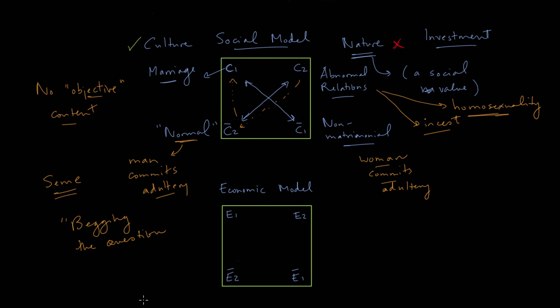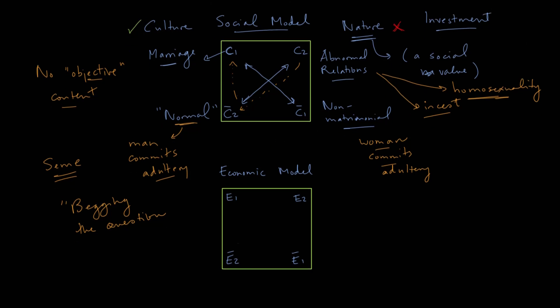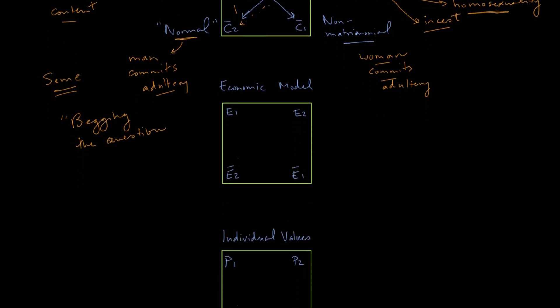We spent a lot of time on the social model, but the point of these different models is actually to start comparing them. Let's move on to the economic model. The economic model makes a distinction between things that are profitable and things that are harmful — and then of course their opposites: not harmful and not profitable.